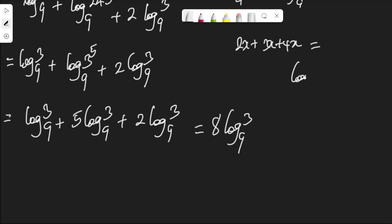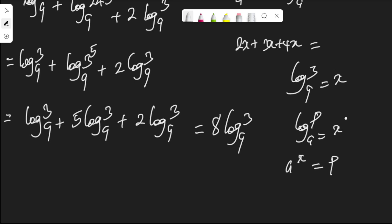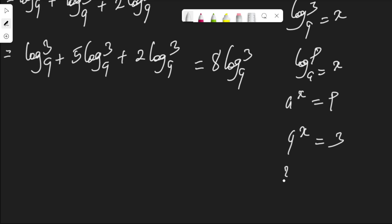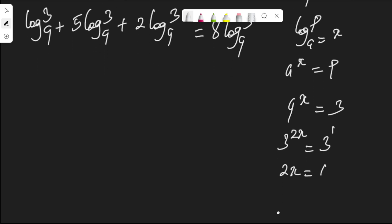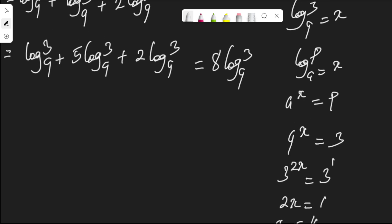Now, log 3 to base 9 is one half. Expressing it: if 9 to the power of s equals 3, then writing 9 as 3 squared gives 3 to the power of 2s equals 3 to the power of 1. Since the bases are the same, we equate the exponents: 2s equals 1, so s equals 1 over 2. Hence log 3 to base 9 is 1 over 2.